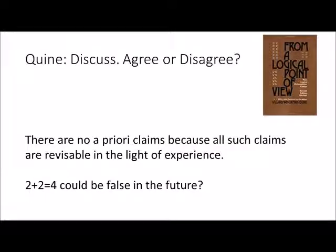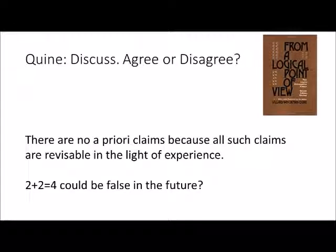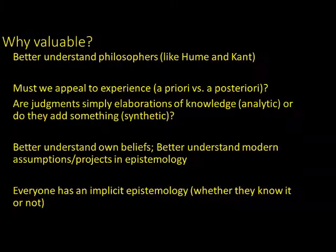A second objection comes from Quine. He didn't believe in a priori knowledge because all a priori claims, he thought, are in principle revisable in the light of experience. Look back at Practice Activity 1 — do you agree with Quine that all the a priori claims listed there are revisable in the light of experience? Take 2+2=4 — is that really revisable? Are there no a priori claims?